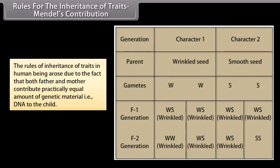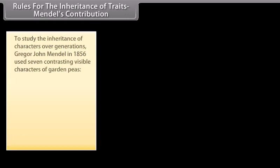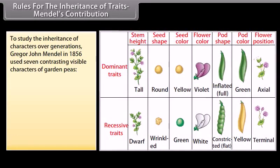Rules for the inheritance of traits. Mendel's Contribution. The rules of inheritance of traits in human being arose due to the fact that both father and mother contribute practically equal amount of genetic material, that is DNA, to the child. Thus, each trait can be influenced by both paternal and maternal traits. To study the inheritance of characters over generations, Gregor John Mendel in 1856 used seven contrasting visible characters of garden peas.